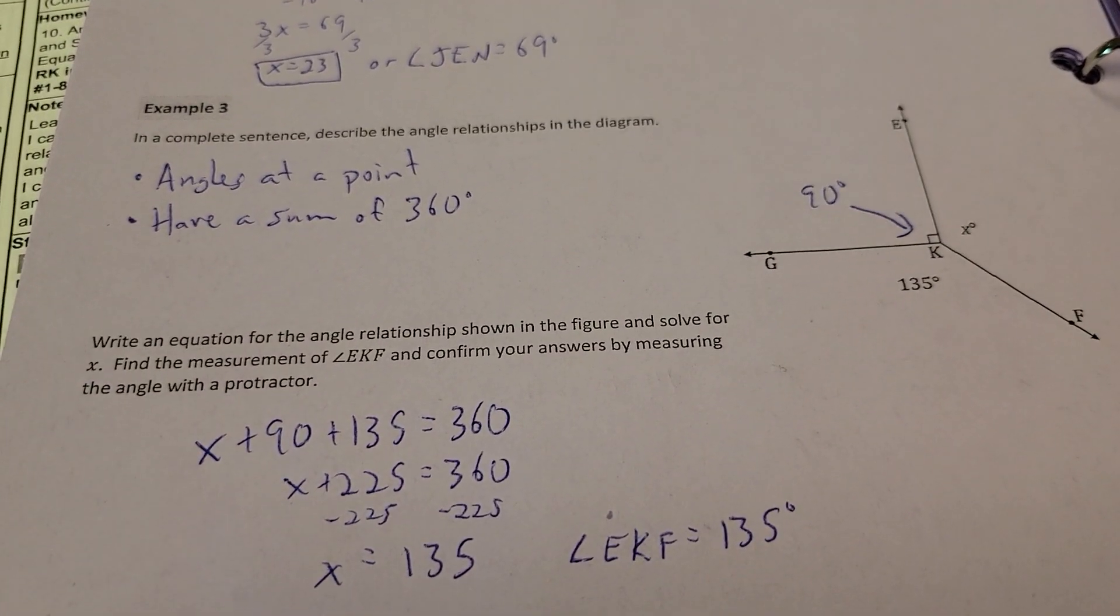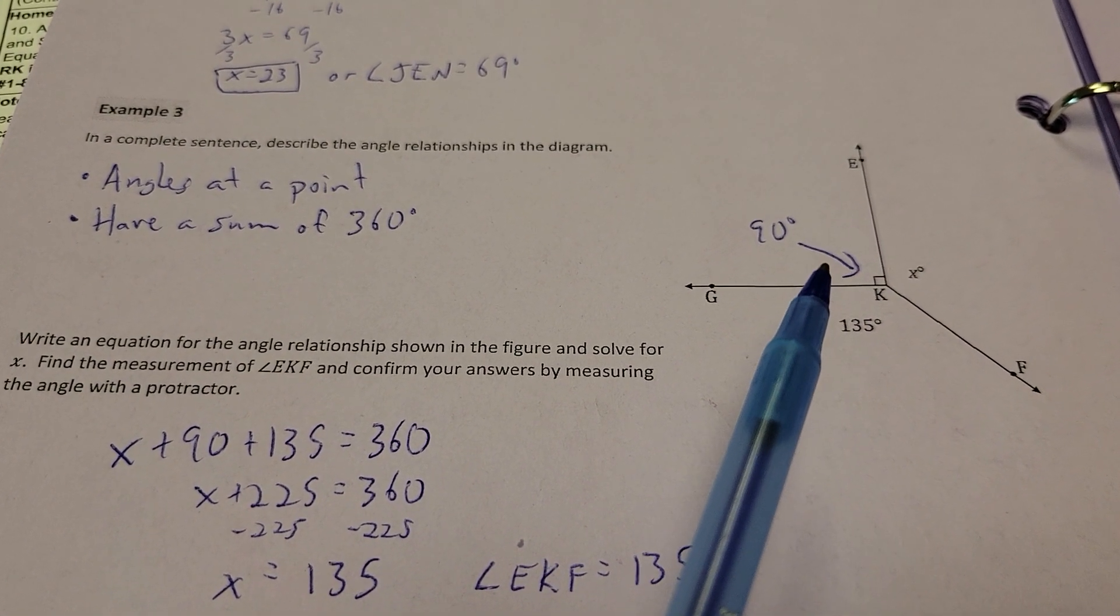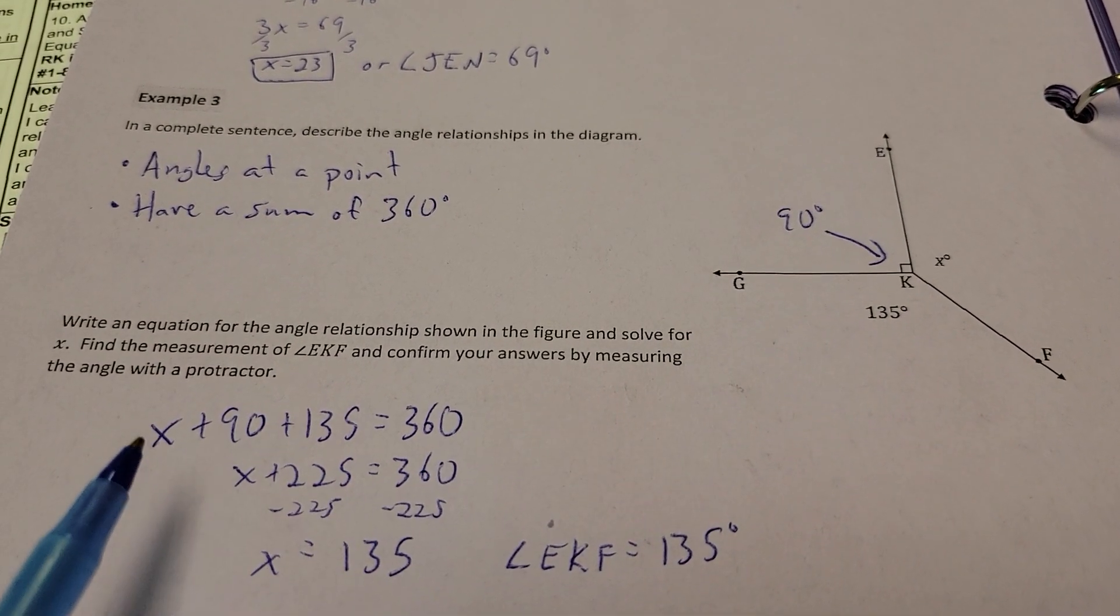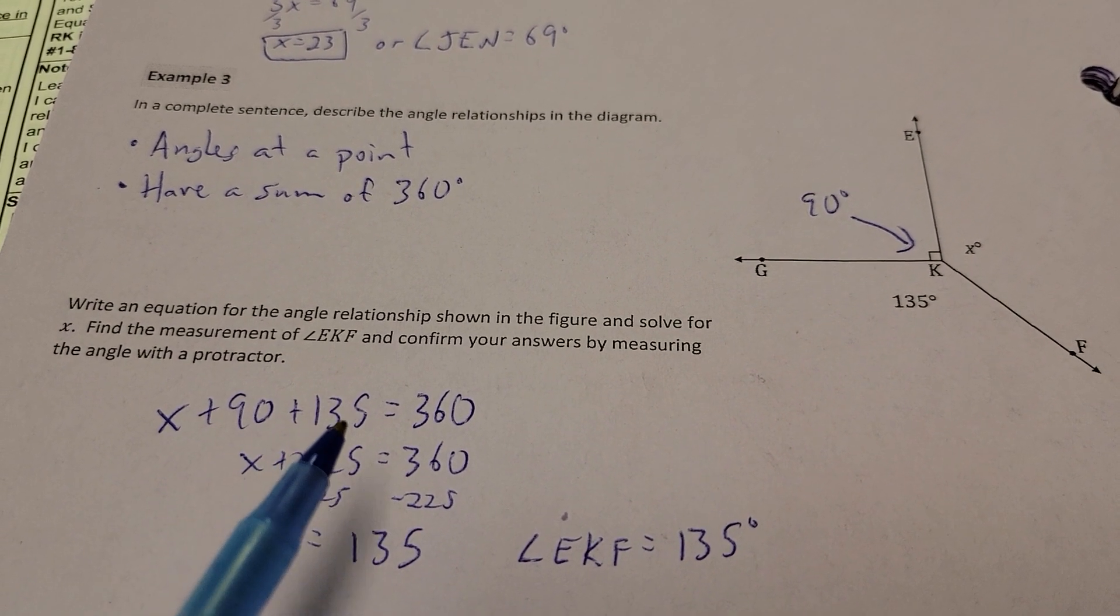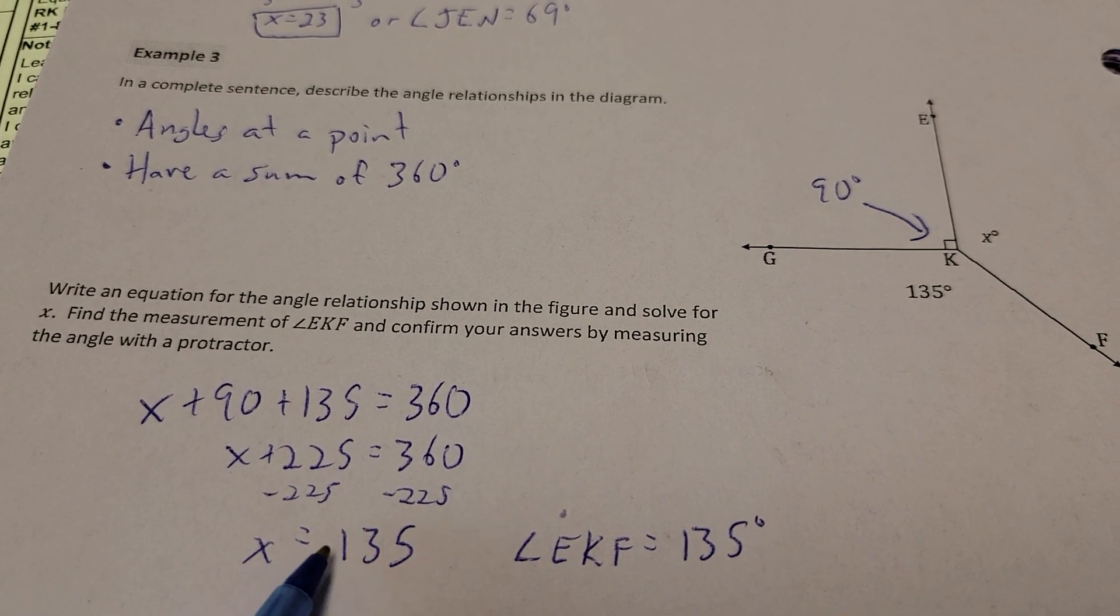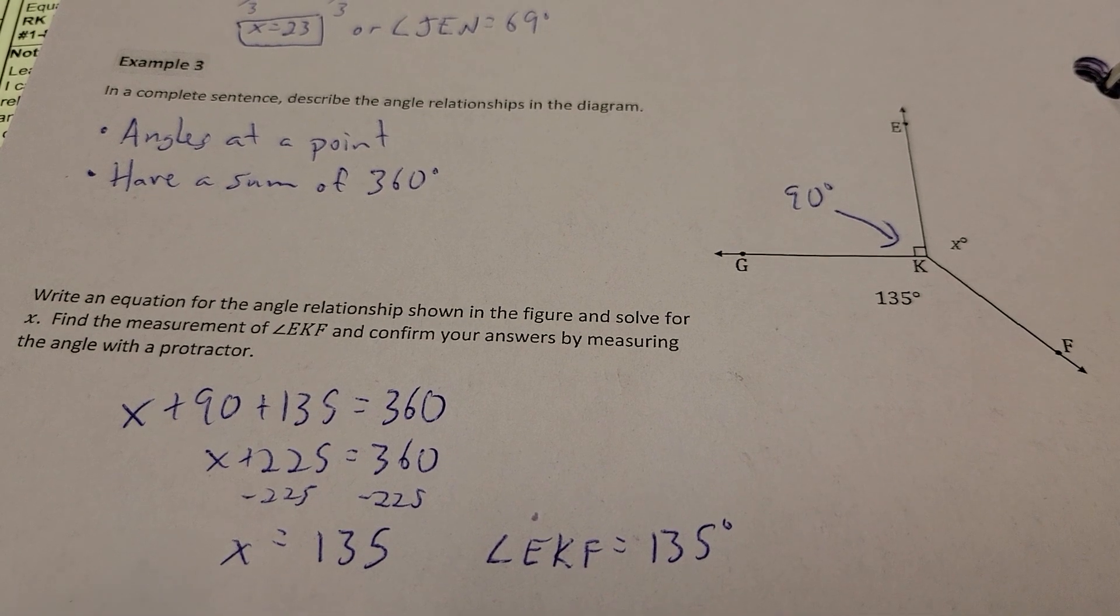So, next up, what's our relationship here? Well, I'm trying to find out what X is. I know this one, and I know this one. So, together, it's angles at a point, because I'm going all the way around. So, really, my X plus 90 plus 135 equals 360 degrees. Combine my numbers, I get 225. And if I take 225 away from each side, I get X equals 135. So, my missing angle was 135 degrees.